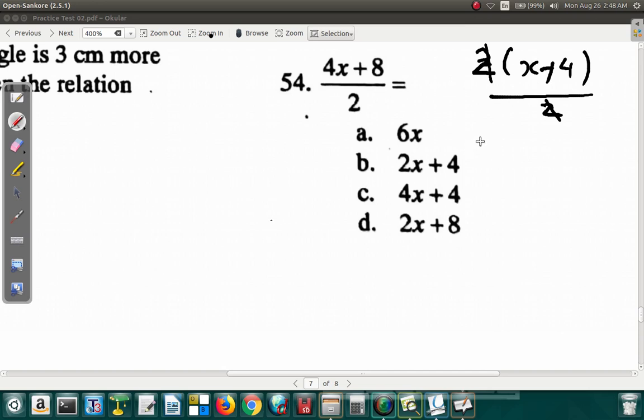So, 4x plus 8 over 2. Oh, 2x plus 4, I mean. Oh, my mistake. I had written 2x instead of 4x, so let's do that again. 4 outside the bracket. Inside the bracket, 4 times this gives you 4x. This would have to be x. 4 times this gives you 8. This would have to be 2, all over 2.